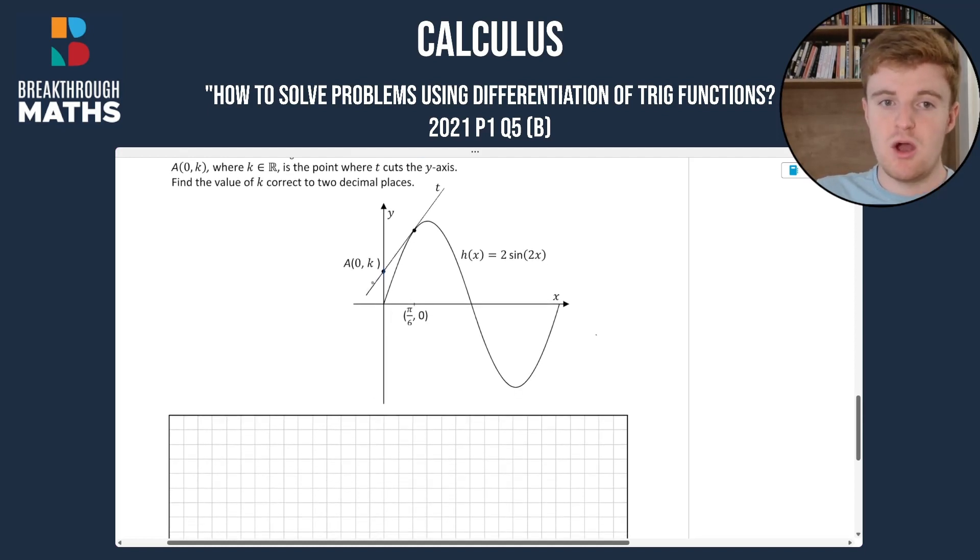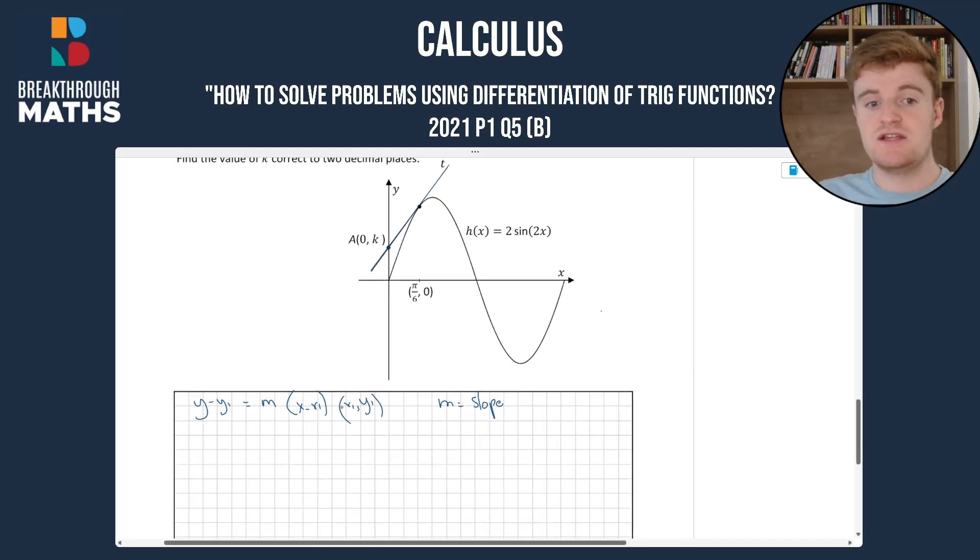So first of all we know that the point a, (0, k), is on the line t. So what we're going to try to do is find the equation of the line t and we know the equation of a line can be written as y - y₁ = m(x - x₁), where (x₁, y₁) is any point on the line and m is the slope of the line. So now what we're going to do is try to find x₁ and y₁ and m.